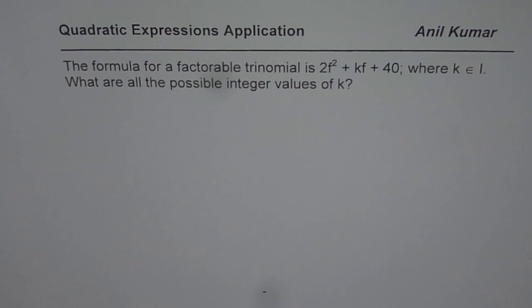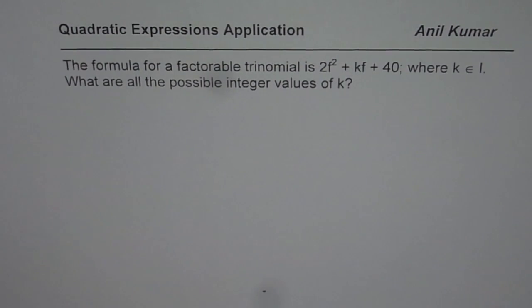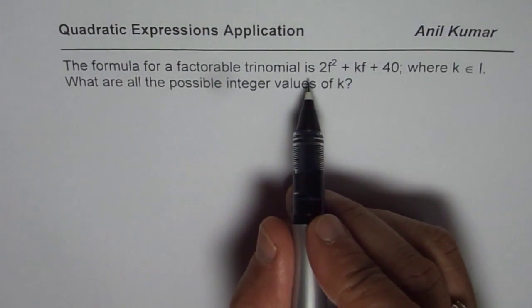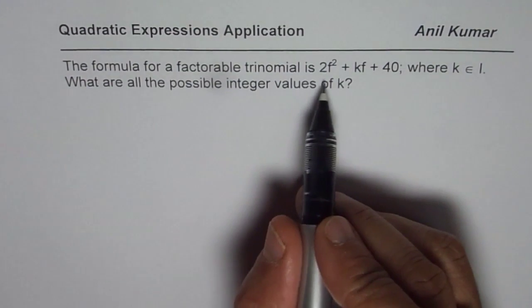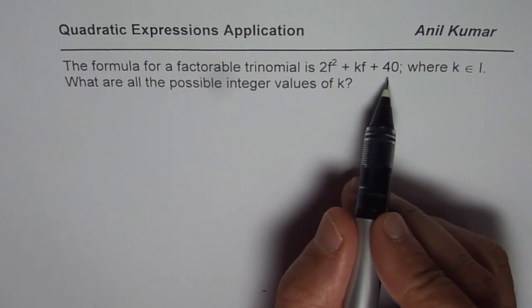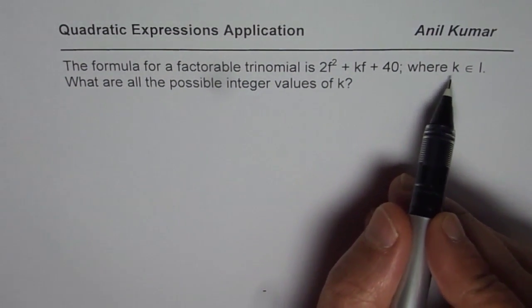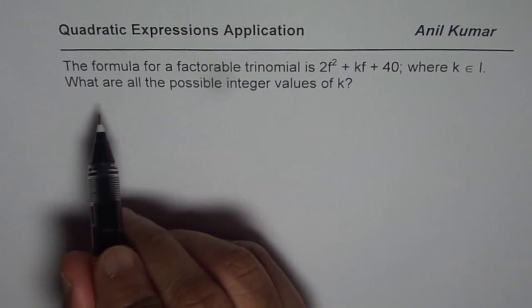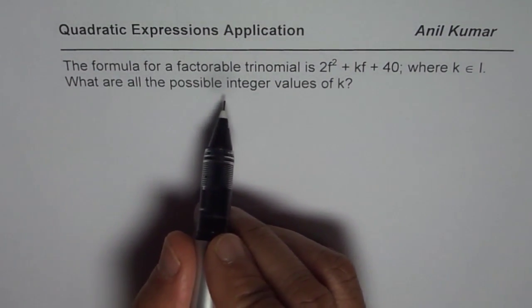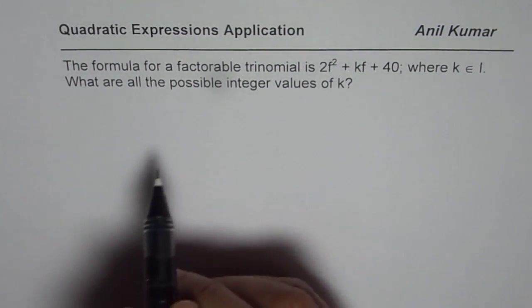I am Anil Kumar and here is a very interesting question on quadratic expressions. The question is: the formula for a factorable trinomial is 2f² + kf + 40, where k belongs to integers. What are all possible integer values for k?